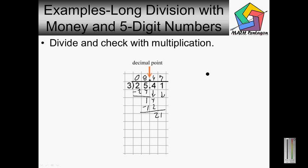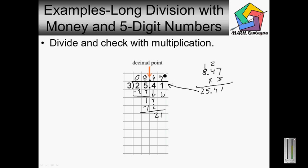Now I can check this answer. Eight dollars and forty-seven cents times three: seven times three is twenty-one, four times three is twelve, plus the two is going to give you fourteen — carry the one. Eight times three is twenty-four, plus the one is going to give me twenty-five. As you can see it matches, so my final answer is eight dollars and forty-seven cents.